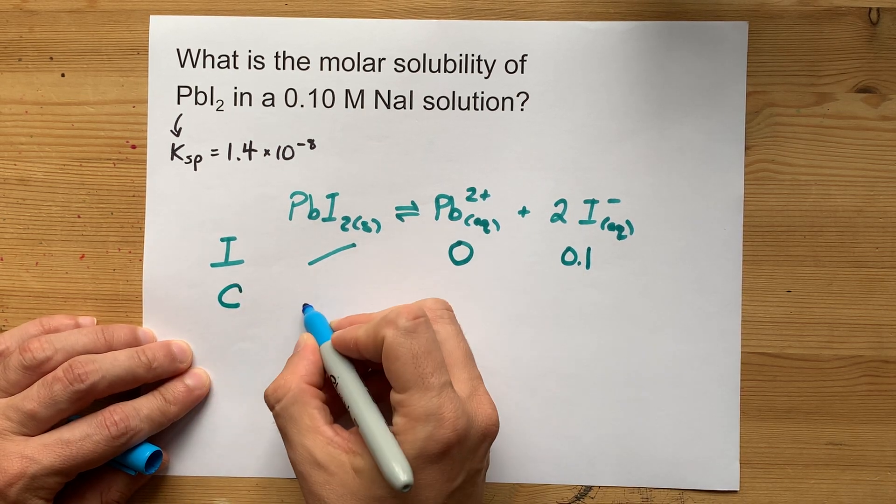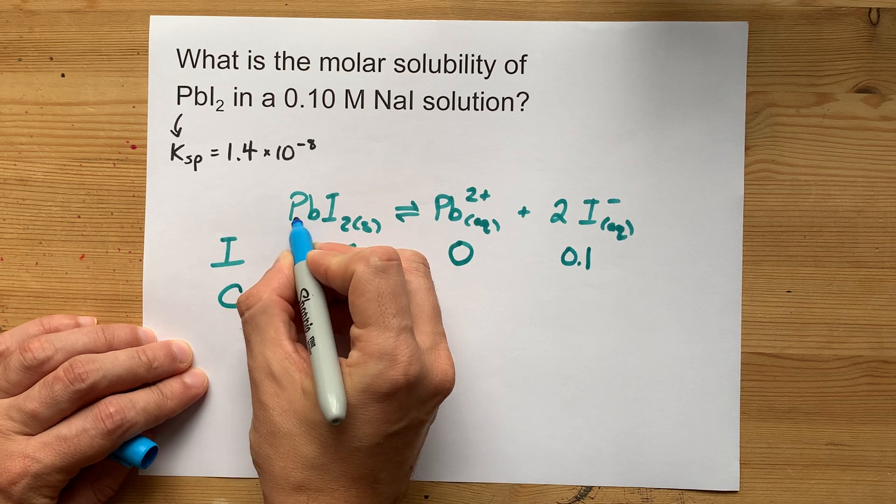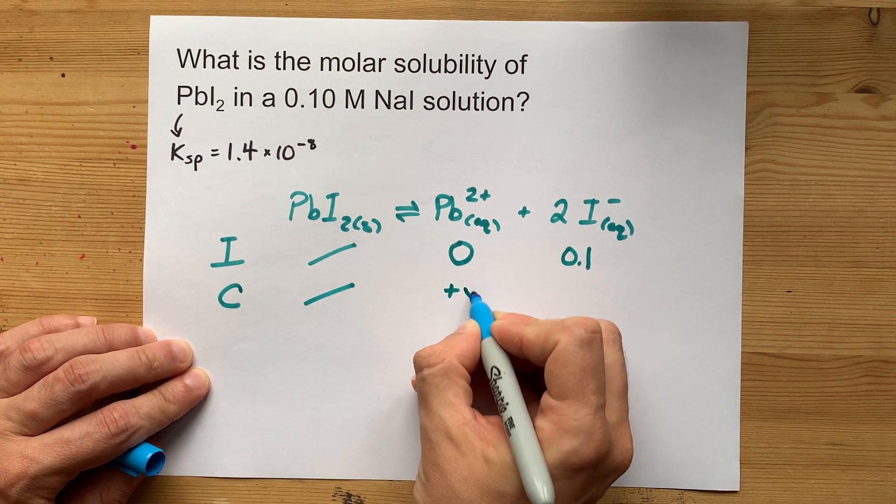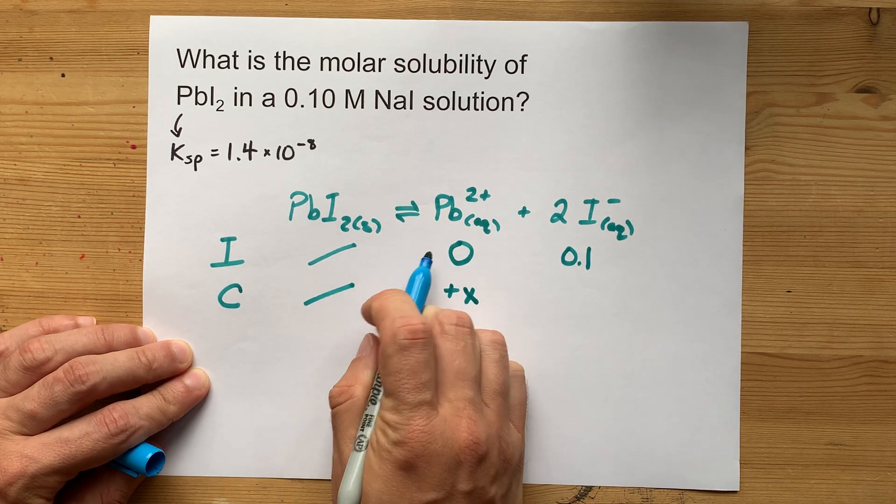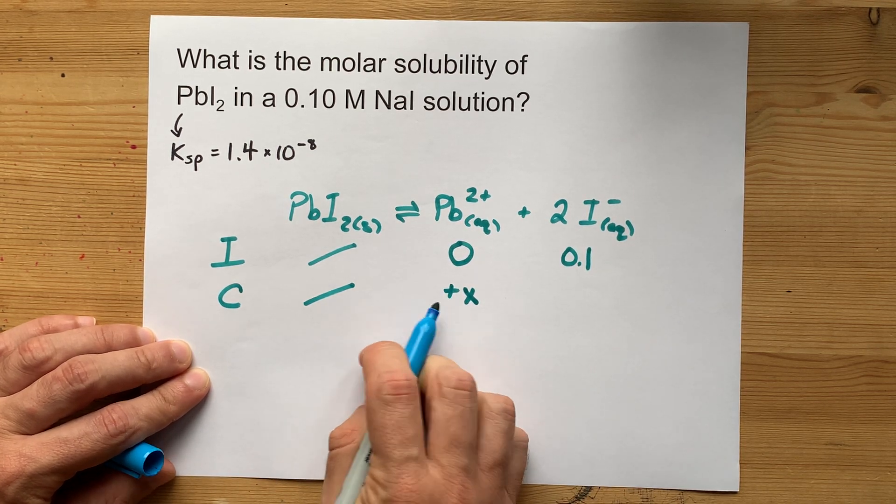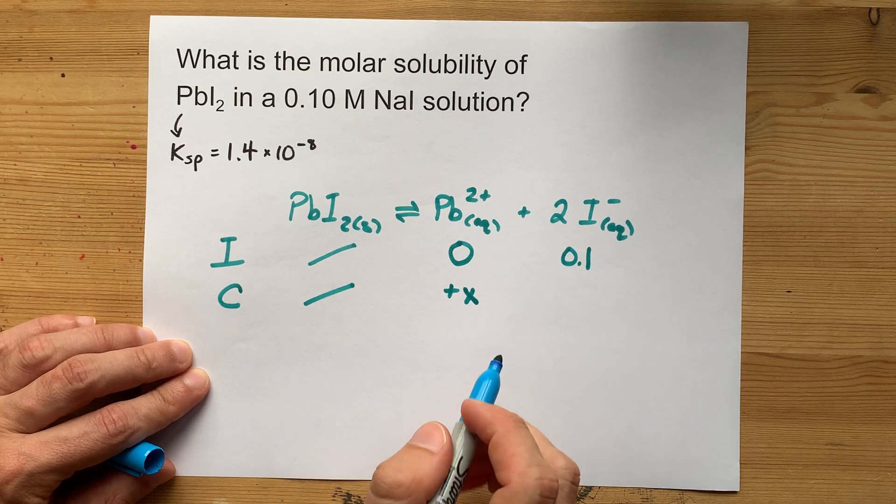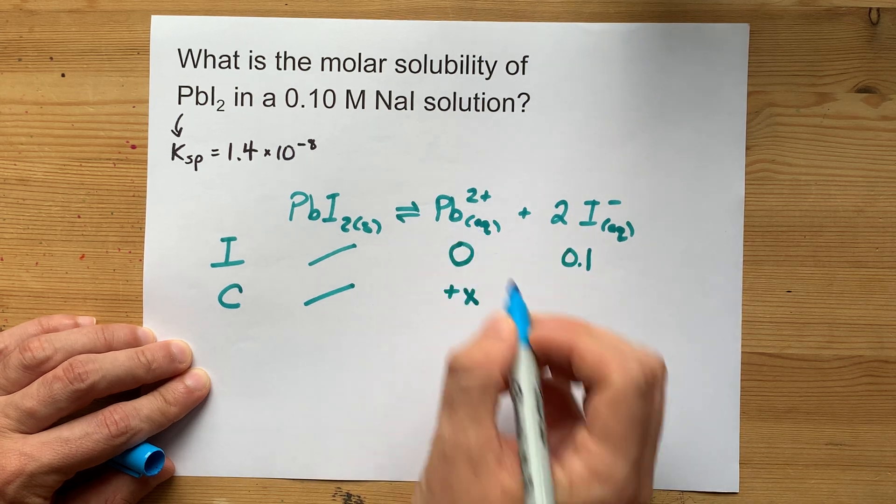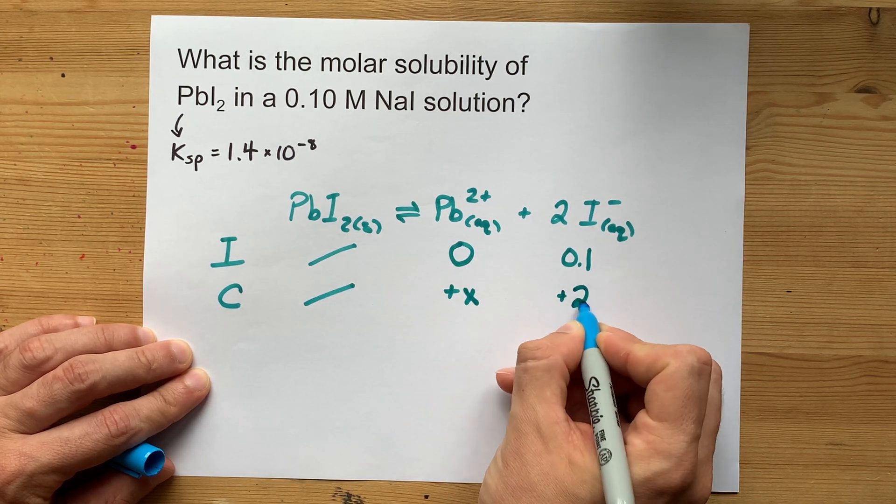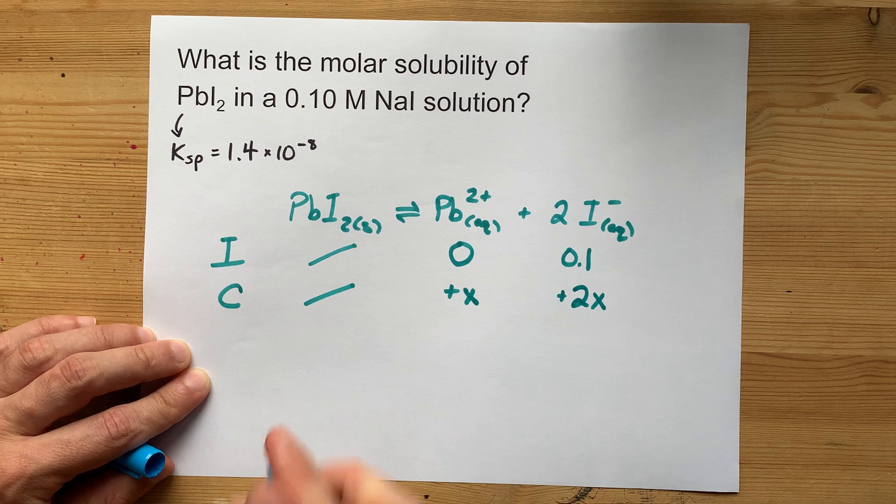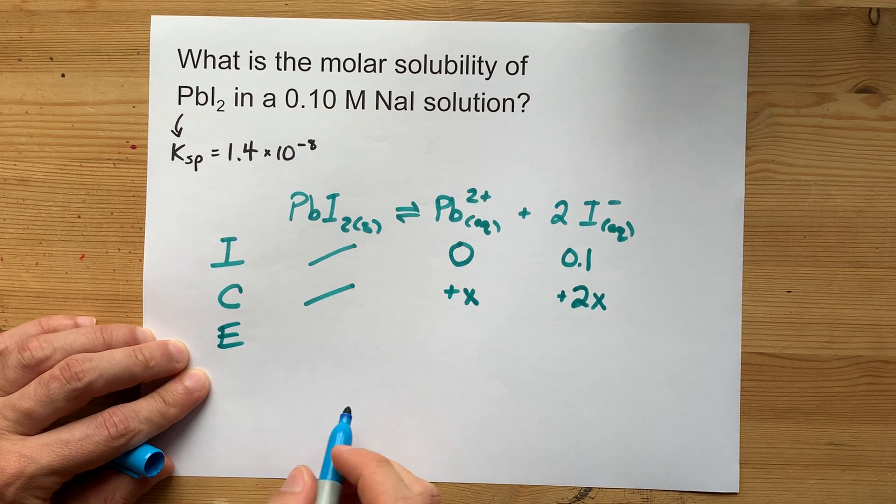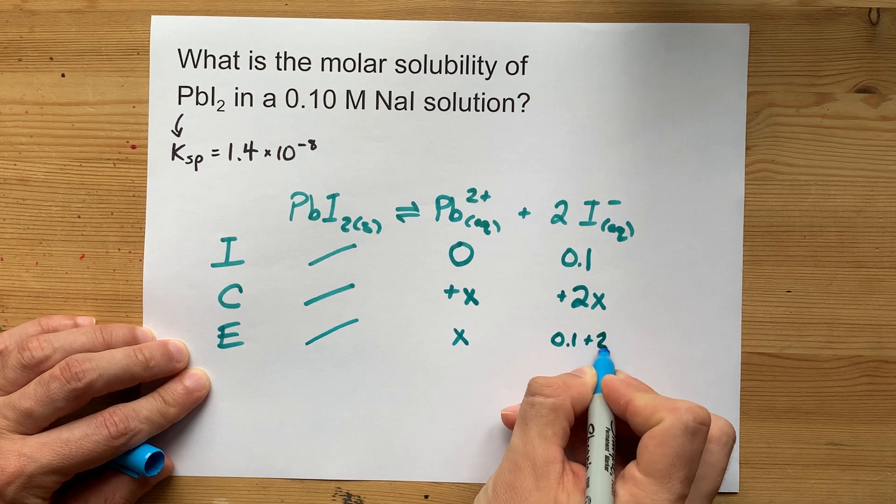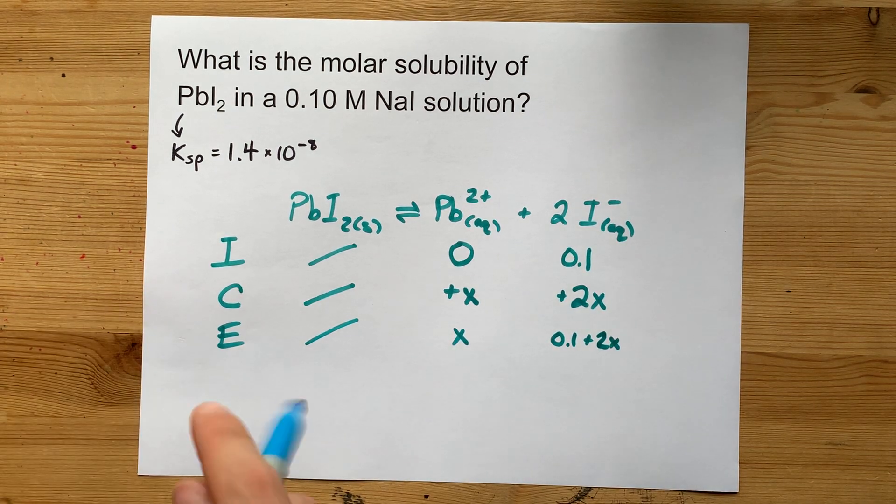The change here: for every 1 PbI₂ that dissolves, we're going to gain 1 Pb²⁺. We don't know how much is going to dissolve, so we'll call it X. What matters is that you get two iodides for each one of those, so this concentration goes up by 2X. That means our equilibrium concentrations are X and 0.1 plus 2X.